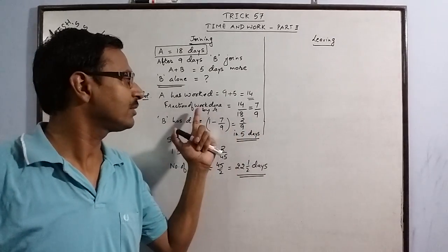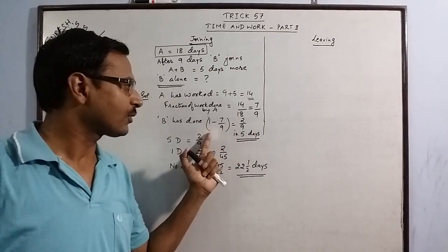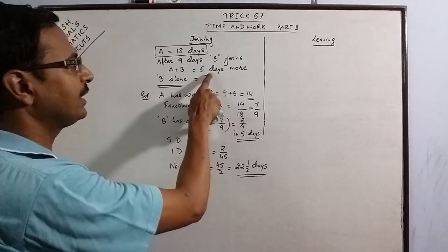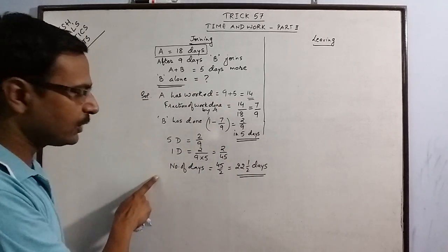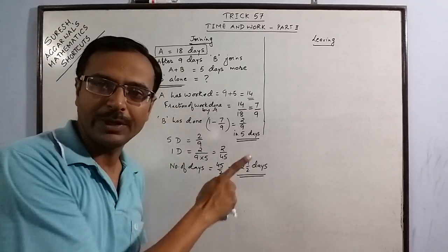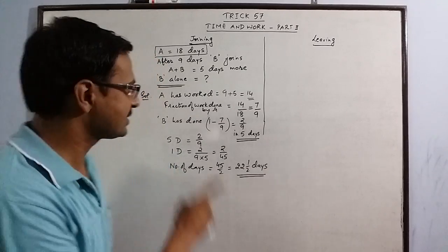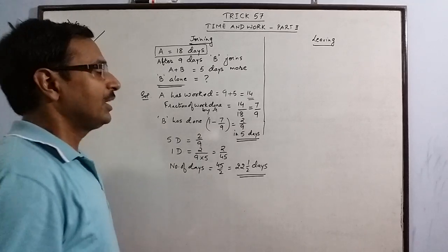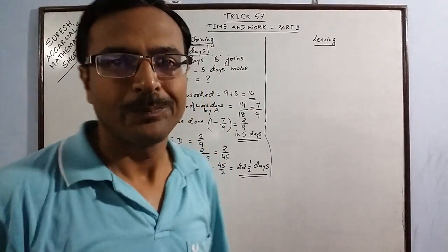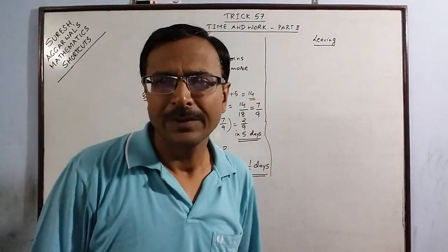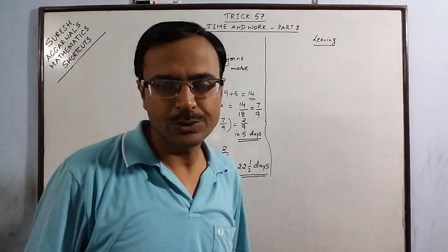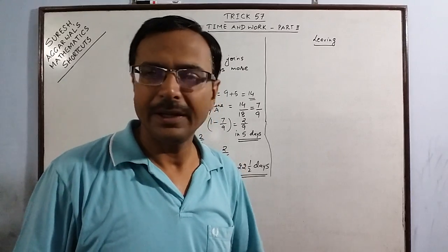To summarize the three steps: first, calculate the fraction of work done by A; second, subtract it from 1 to get the fraction done by B; third, since that work was done in 5 days, apply the unitary method to find the total number of days for B. This is the first type of question, which appears very frequently in competitive exams. Now let us move to the second situation where two persons start work together and one of them leaves.